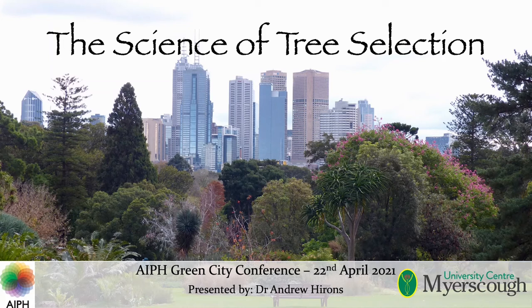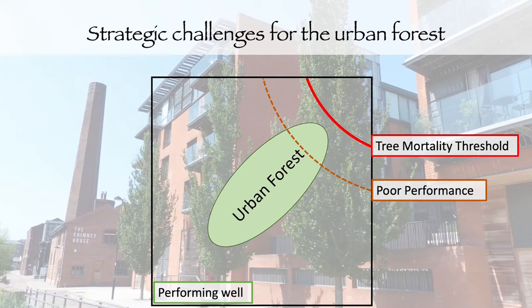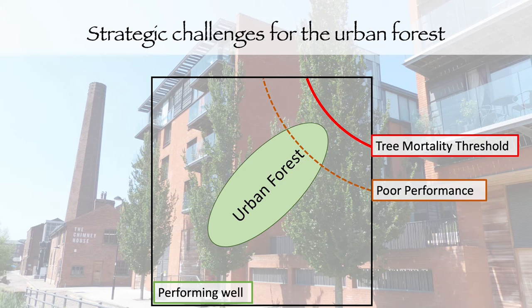Hello, my name is Andy Hirons and I'm going to talk to you for the next 15 minutes about the science of tree selection. It's a great privilege to contribute to this Green City Conference. If you consider the urban forest as the general population of trees within the urban environment — made up of street trees, park trees, those in gardens and verges — then inevitably some of them will be performing rather poorly. They may have gone through a poor performance threshold related to soil volume, the rooting environment, or even the above-ground environment. We have a number of strategic challenges meaning much more of the urban forest is going to be under pressure.